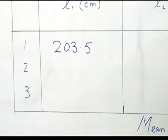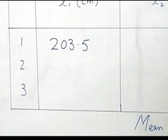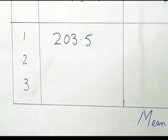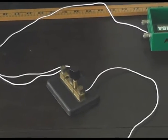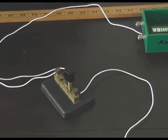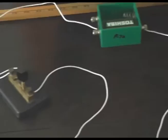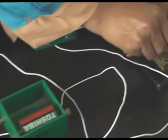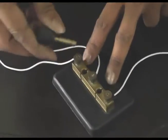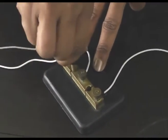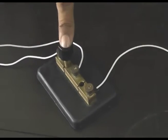Now, we have to find a balancing length for cell E2 with a similar procedure. We have to find the balancing length of cell E2, and for that purpose, first of all, disconnect this plug key.